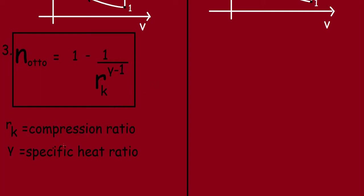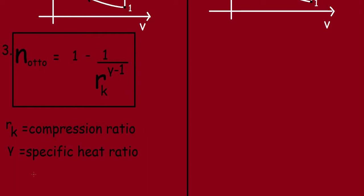We want the engine to operate at higher compression ratios. If Rk is higher, the term 1/Rk^(γ−1) diminishes, causing the overall efficiency expression to rise. Therefore, the efficiency of the Otto cycle is higher when the compression ratio is higher.